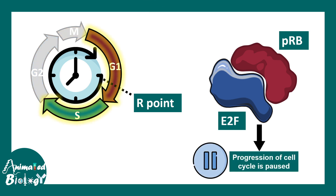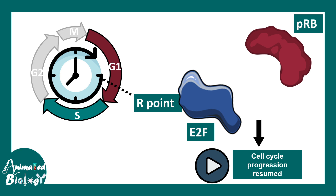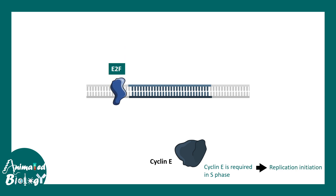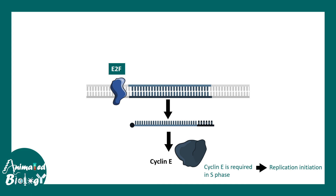For the cell cycle to move forward, PRB must separate from E2F. Once E2F is free from PRB, cell cycle progression can be resumed. E2F binds to a specific region that produces cyclin E, which is required for replication in the S phase. E2F binds to the cyclin E gene and leads to its transcription, so cyclin E is produced with the help of E2F.